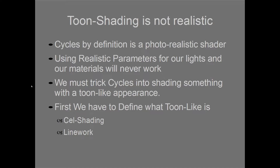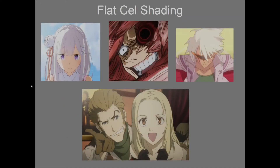What makes a toon shader is the cell shading and the line work. There are two kinds of cell shading we will be making today: flat cell shader and specular cell shader. Flat cell shaders involve two main colors per material — a lighter color and a darker color — with always a sharp line between the two areas, never a gradient. We have to ensure that Cycles does not make certain areas way too dark or way too bright. So in our materials we will actually set up the darkest possible color.